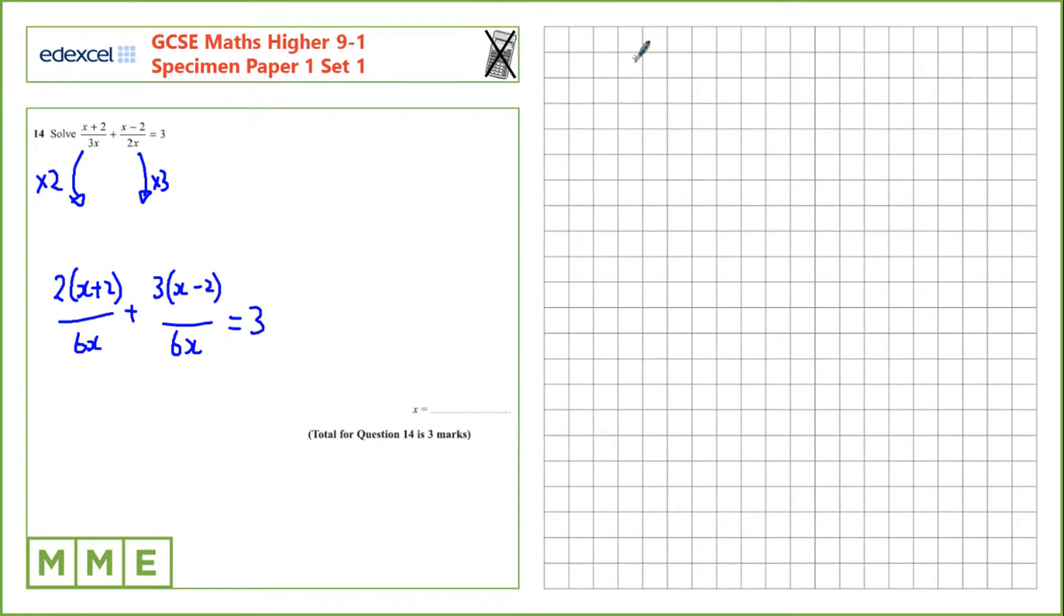Now we can add these two fractions together. We have 2x plus 2 plus 3x minus 2, that's all over 6x, equals 3.